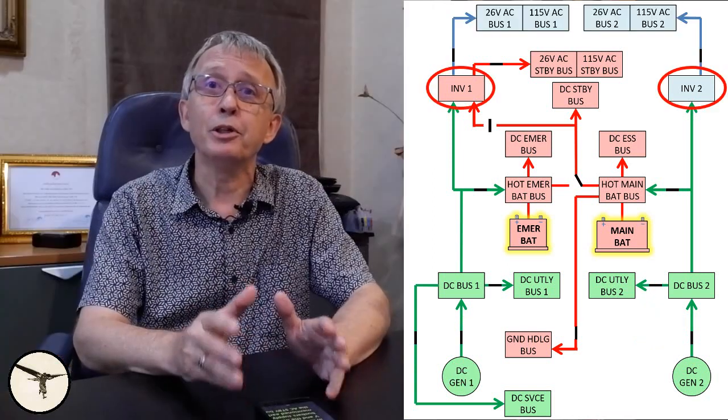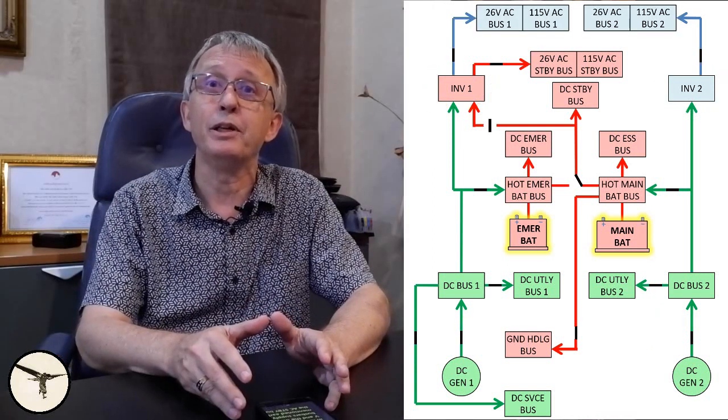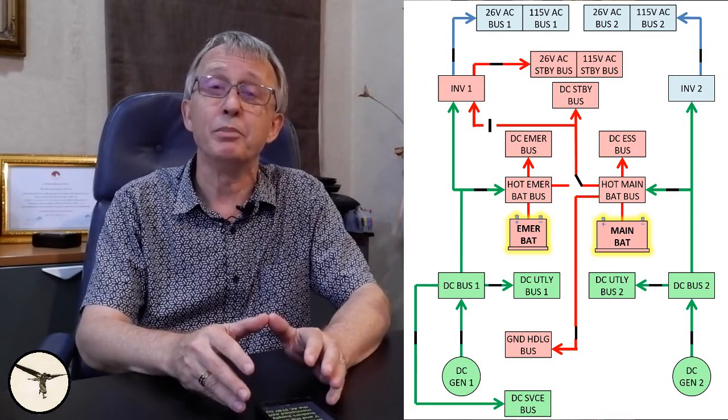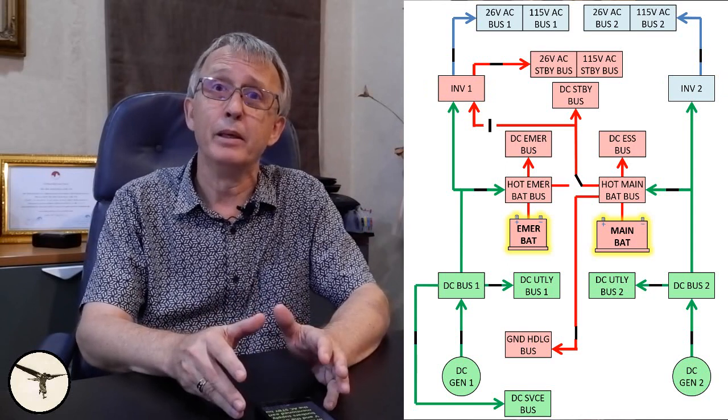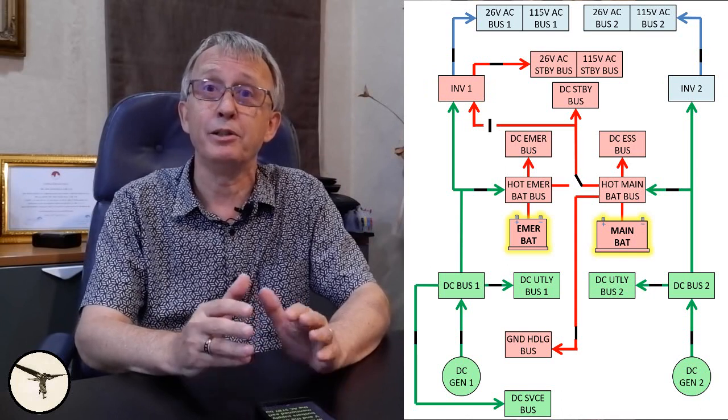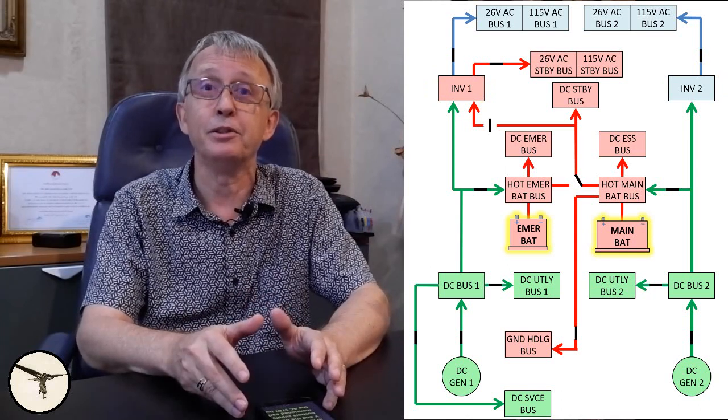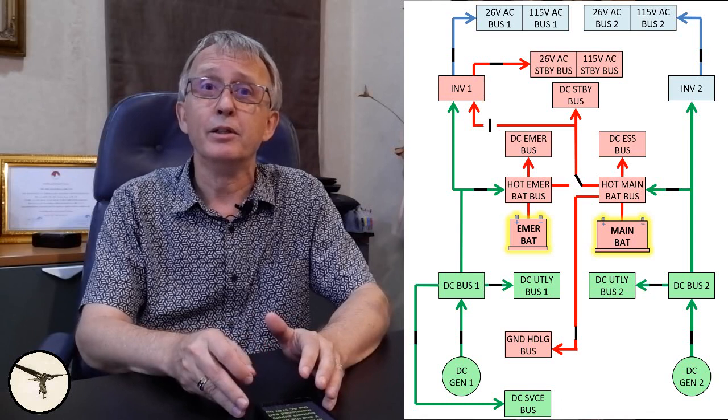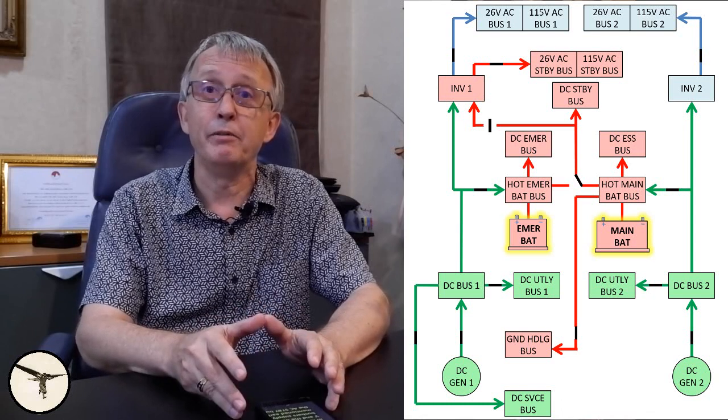The two inverters supply constant frequency AC power to AC bus 1 and AC bus 2 respectively. Each bus bar is in fact two bus bars, one supplying 26 volt and the other 115 volt. The AC bus bars supply several avionics.